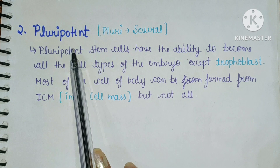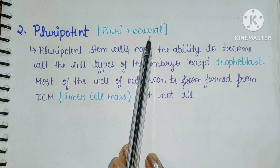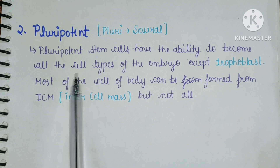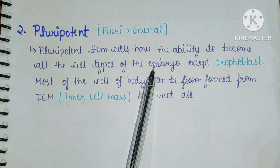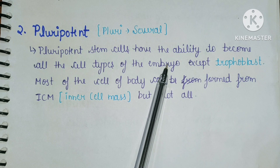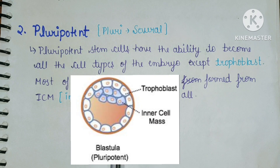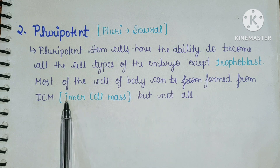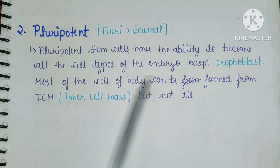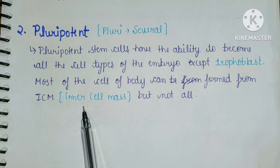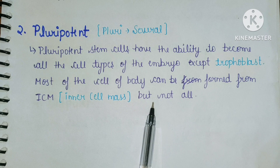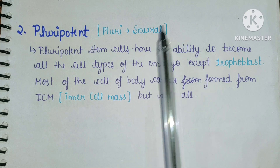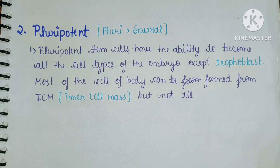The second type is pluripotent stem cells. Pluripotent stem cells have the ability to become all the cell types of the embryo. You can see in the diagram that there is an inner cell mass (ICM) and a trophoblast. Pluripotent cells can become all the cells in the embryo. Most cells of the body can be formed from the ICM, but not all. Pluripotent means several.